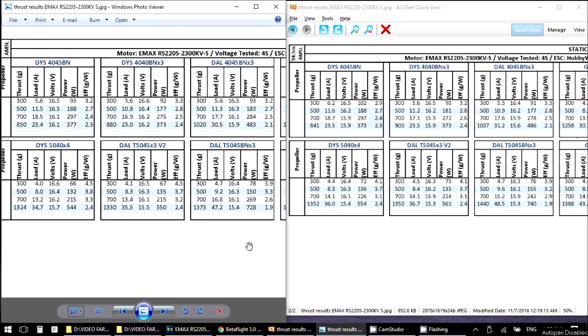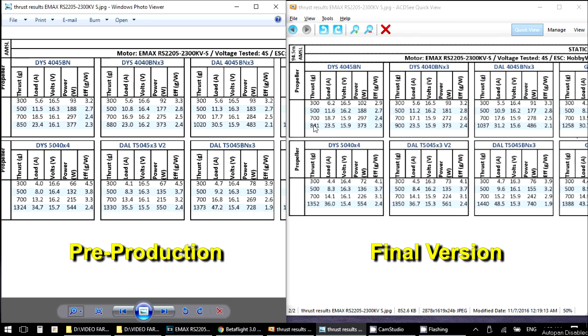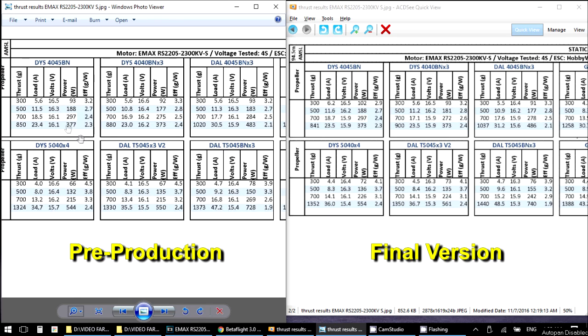Okay, so here's the results of the test. On this side we have the final version with the 0.15mm laminations and this was the prototype version. So it's kind of interesting to see how the change to the thinner stator laminations is giving more power to the motor.